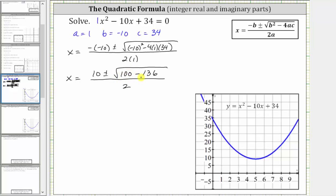Simplifying under the square root, 100 minus 136 is negative 36, giving us x equals 10 plus or minus the square root of negative 36 all divided by two.